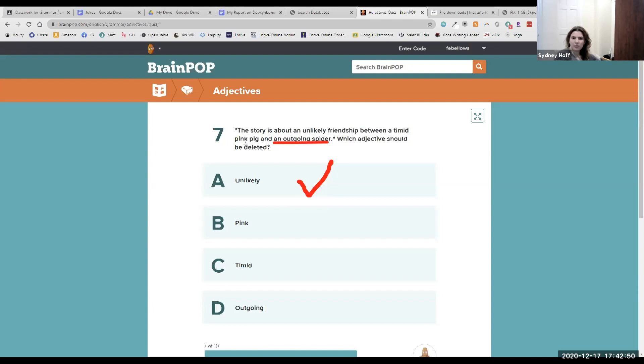You've described the spider as outgoing. So now you need to describe the pig's personality. We wouldn't really care that the pig is pink, but you certainly want to capture timid.